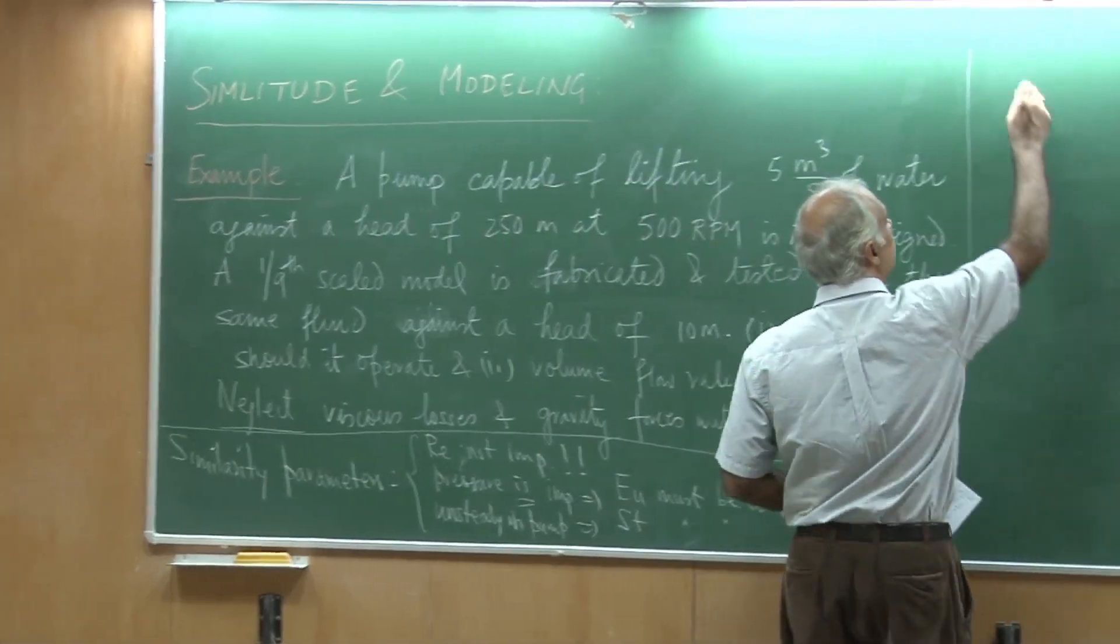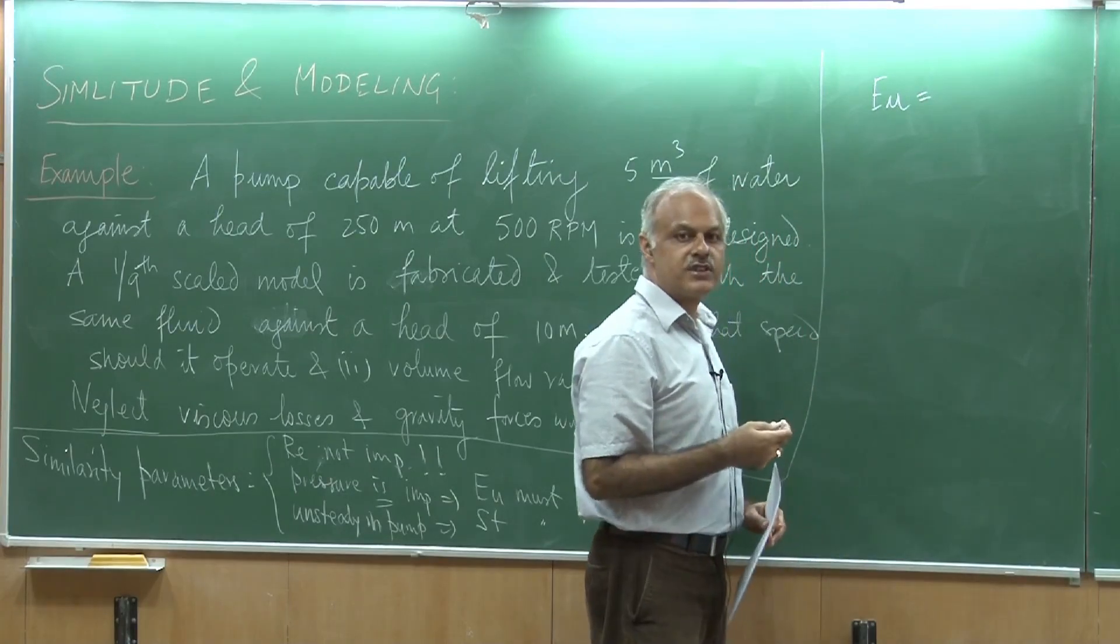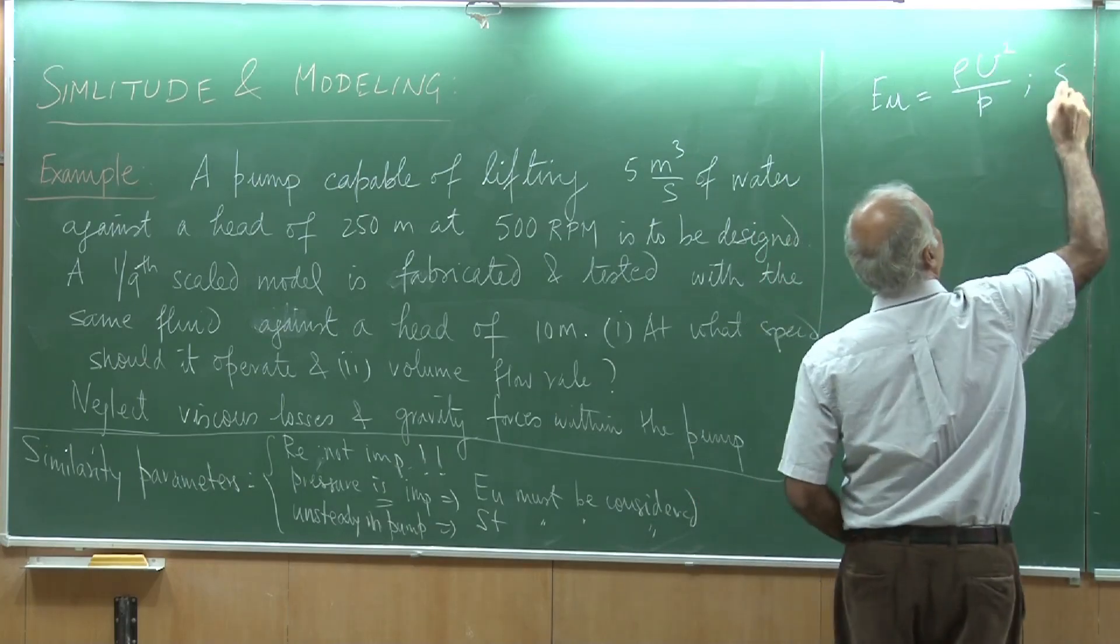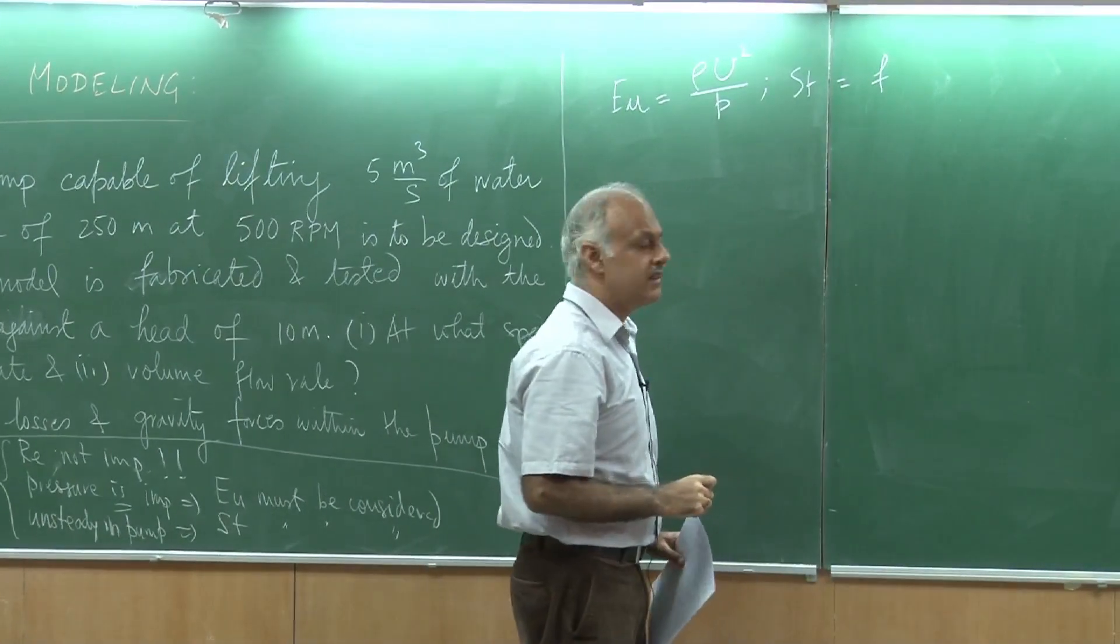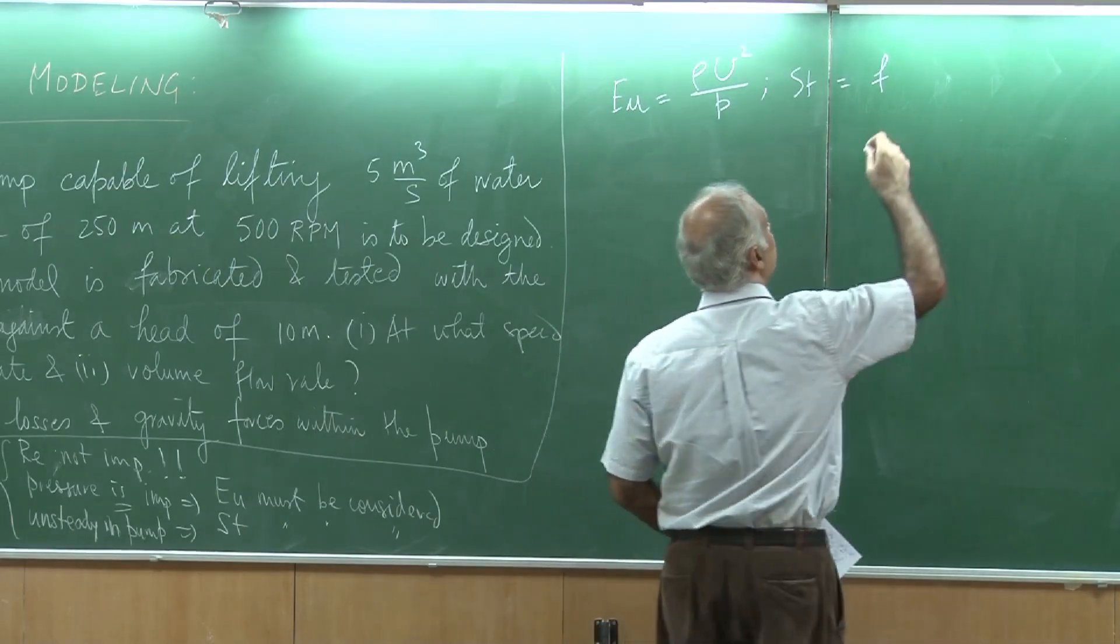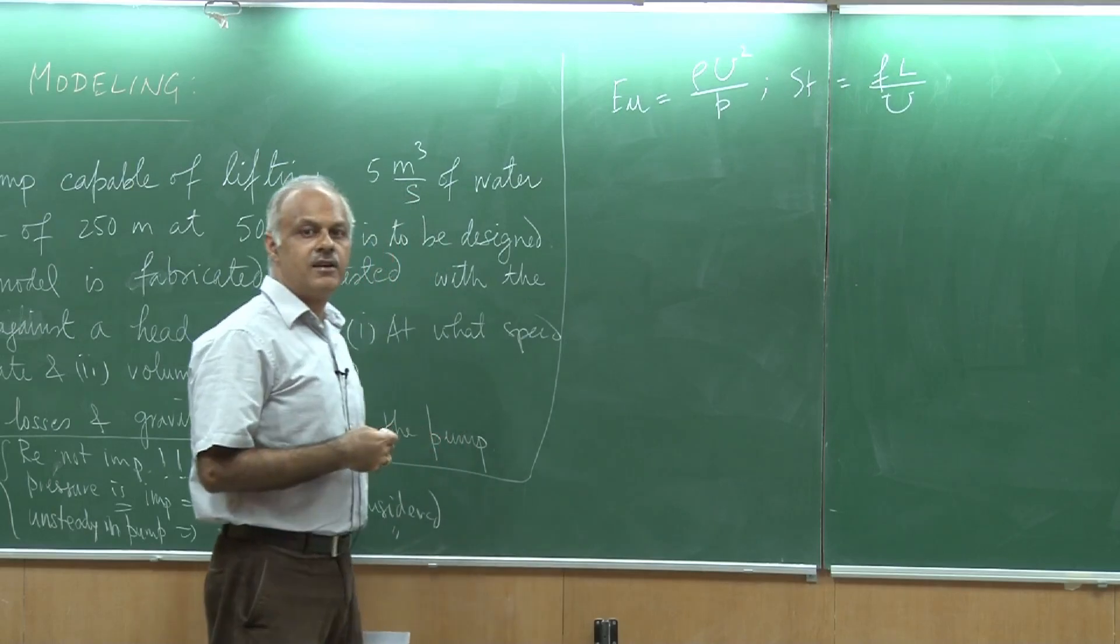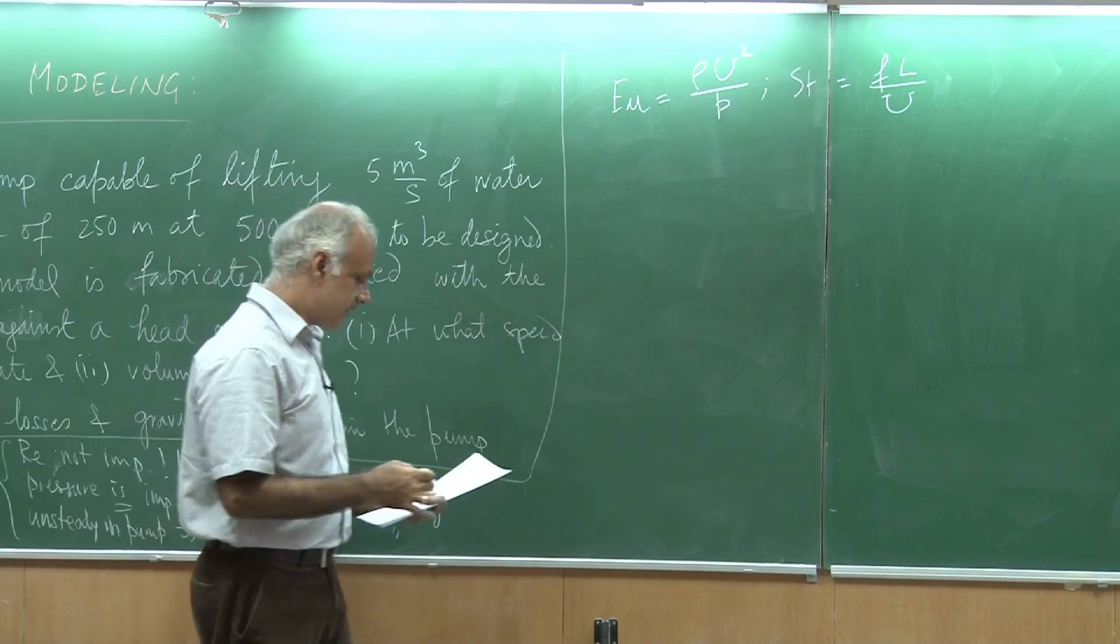This is an interesting problem where we do not have to worry about the Reynolds number. For dynamic similarity, we must ensure that these two parameters - the Euler number and the Strouhal number - should be identical between the model and prototype. If you recollect, we had defined the Euler number as the ratio of inertia forces to pressure forces, so it was something like ρu²/p. And the Strouhal number was something like a frequency - inertia forces and unsteady forces - so frequency times a length scale and a speed.